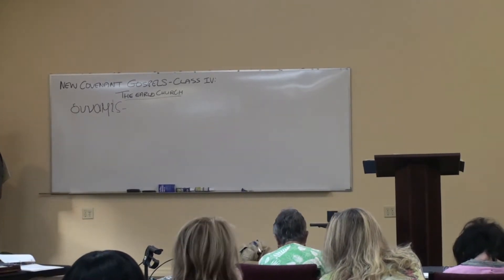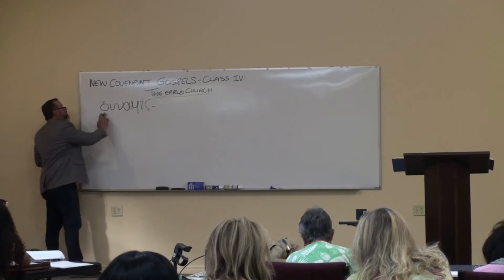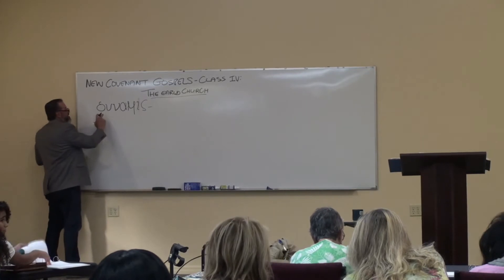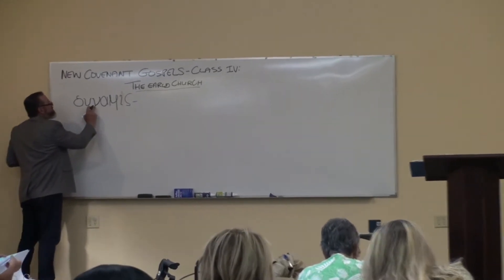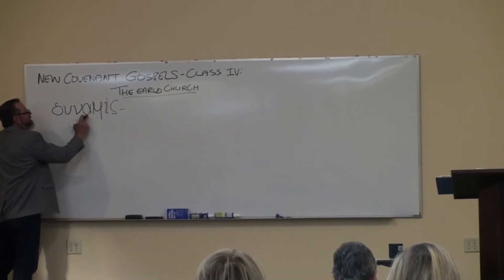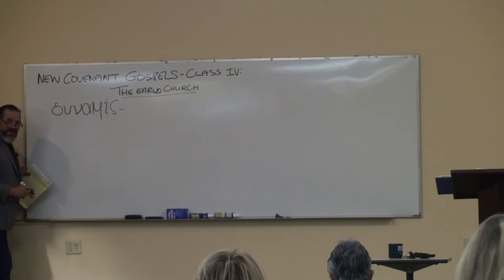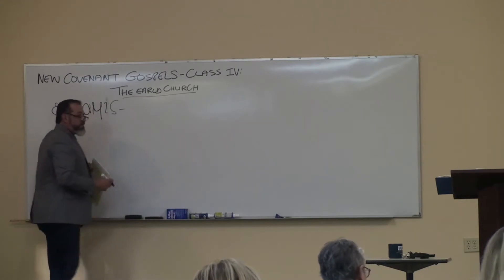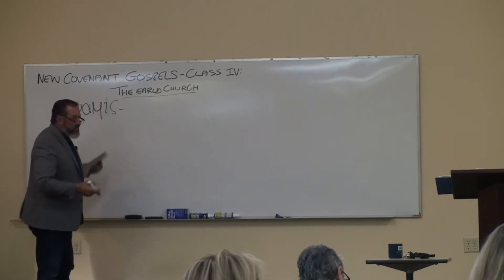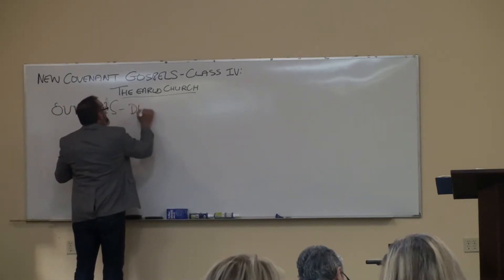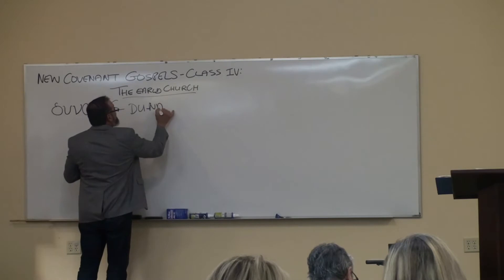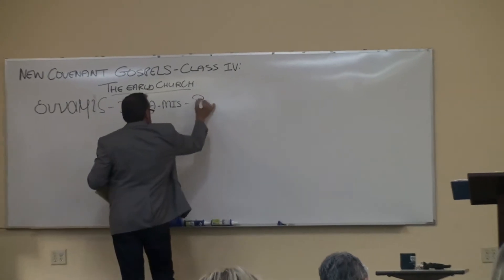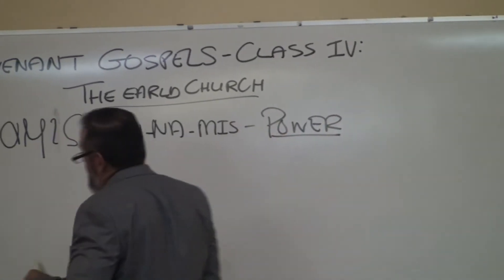Anybody want to try that word? Try to spell it in Greek. Delta, epsilon — dunamis. Sometimes it's pronounced 'duthemus' but it's 'dunamis.' So the word dunamis — what does that sound like? Dynamite. That's where the word dynamite comes from. Dunamis. And it's the word for power.